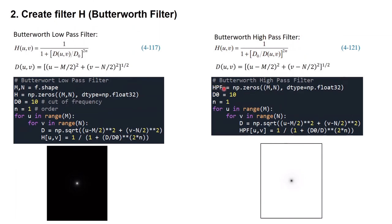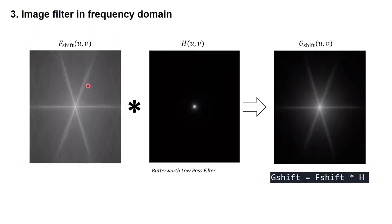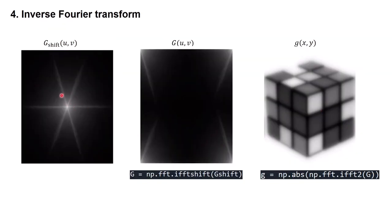For the high pass filter, we create a variable HPF using np.zeros, then set values D0 and N, and using the for loop we calculate D and fill HPF using the Butterworth high pass filter formula. These two images show our Butterworth filter — on the left is the low pass filter and on the right is the high pass filter. Now we have our image in the frequency domain and our Butterworth filter, and we apply the filter by multiplying the frequency domain image with the Butterworth filter to get our filtered image in the frequency domain.